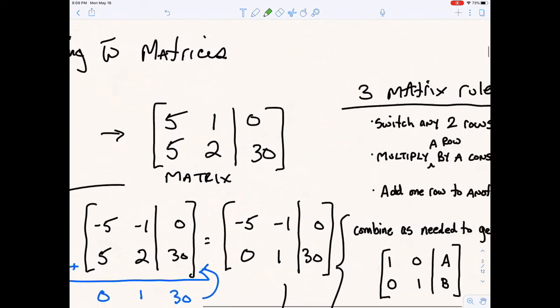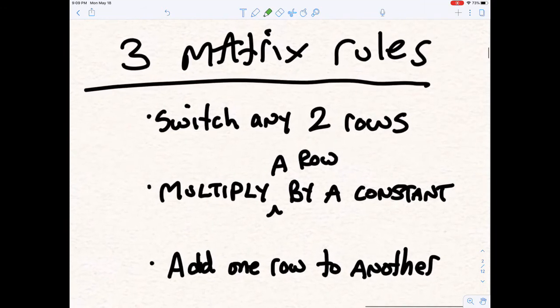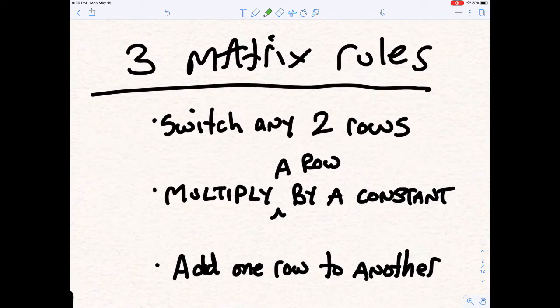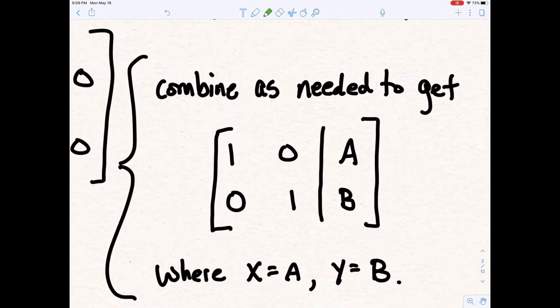With that in mind, here are the goals and what you're allowed to do with matrices. There were three rules and there are these three bullet points here. You're allowed to switch any two rows, literally just pick up the first and put it in the second. You're allowed to multiply any row by a constant. It can be a fraction, a decimal, a negative, a positive, it doesn't matter. And you're allowed to add one row to another row. And you're allowed to do these rules in combination, which is how we can ultimately get this as an answer.